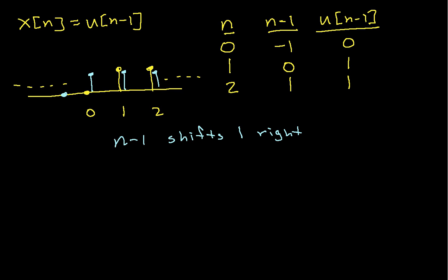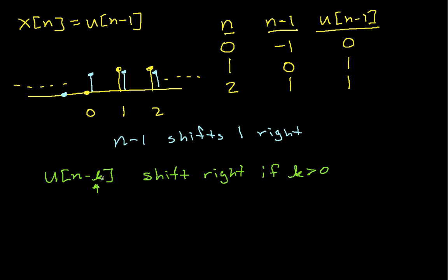Hopefully you can see the pattern. If I have u of n minus k, where k is some integer, this will shift right if k is greater than 0. So u of n minus 1 shifts right by 1, and u of n minus 10 million would shift right by 10 million. This will shift left if k is less than 0 — so u of n plus 1 shifts left by 1, and u of n plus a million shifts left by a million.